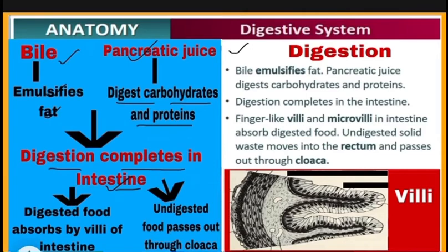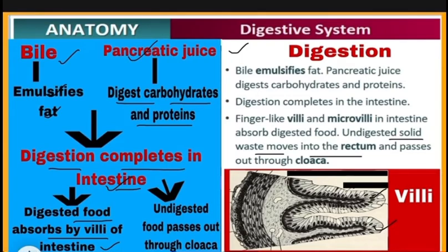Final digestion is completed in the intestine. The digested food is absorbed by villi of the intestine — these are finger-like projections that increase the surface area and help in absorption. The undigested solid waste moves into the rectum and passes out through the cloaca.